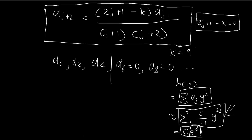This approximation formula only works when j reaches large numbers — it is only then that h(y) starts behaving like e to the power of y squared. So if we chop off these larger constants, that divergent behavior will not happen, and our solution will be normalizable.